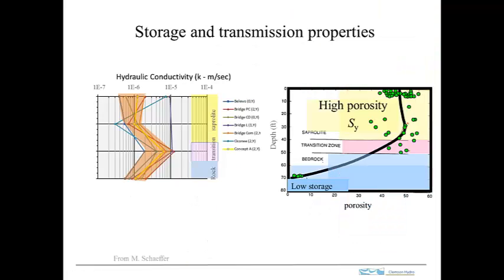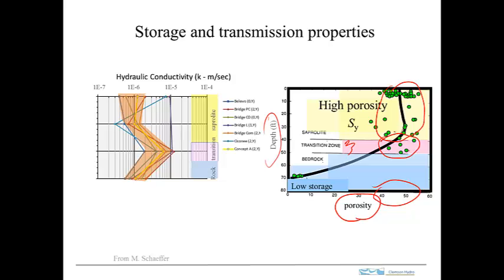These are the kinds of properties expected in this area. Here's porosity as a function of depth, showing the saprolite, the transition zone, and down into the rock. In the saprolite, porosities are up in the 40 to 50% range — quite high. The transition zone has similar porosity, but once you get down into the fractured rock, the porosity drops to just a few percent.